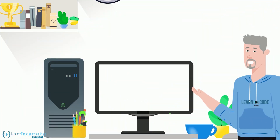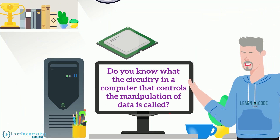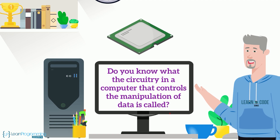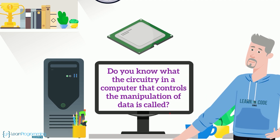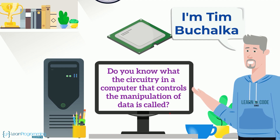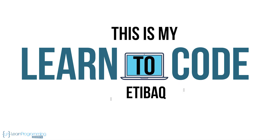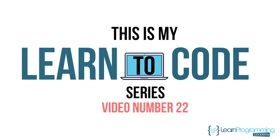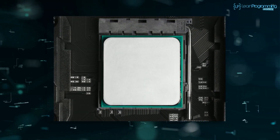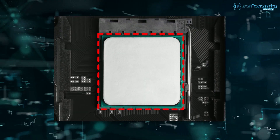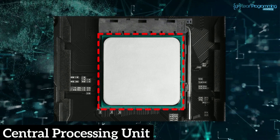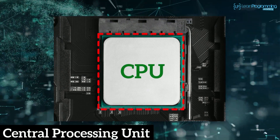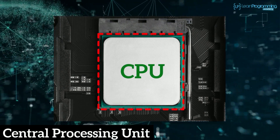Before we get into that — do you know what the circuitry in a computer that controls the manipulation of data is called? My name is Tim Buchalka from the Learn Programming Academy, and this is my Learn to Code series right here on YouTube. Well, that circuitry is called the Central Processing Unit, or CPU, and we'll explore this topic in this video.